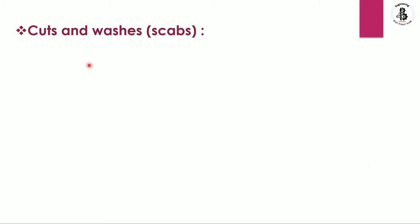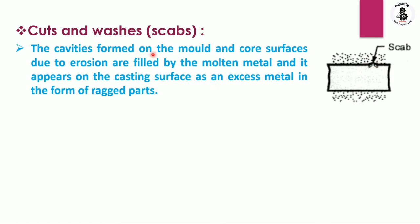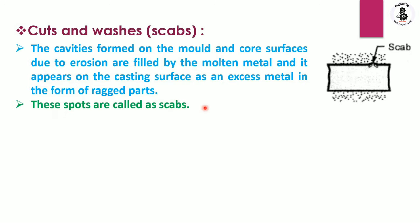Next are cuts and washes, also called scabs. Cavities form on the mold and core surfaces due to erosion and are filled by the molten metal, appearing on the casting surface as excess metal in the form of ragged projections. Such irregularities generated on the core or mold surface are known as cuts or washes — these spots are called scabs.